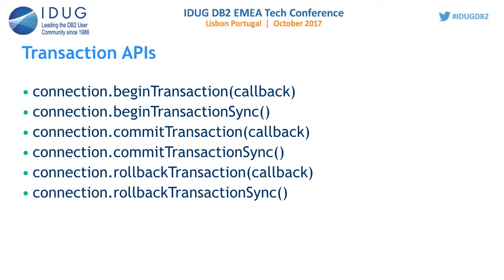Now let us see the transaction APIs. Applications require committing or rolling back transactions based on events or application logic. IBM DB supports transaction-specific APIs. To turn off auto-commit and start a transaction, call the beginTransaction API, then execute your application logic. Finally, based on the result, call rollbackTransaction to rollback or commitTransaction to commit.